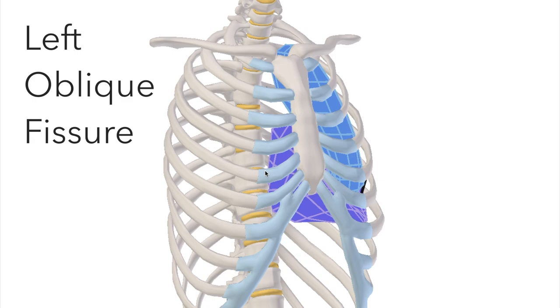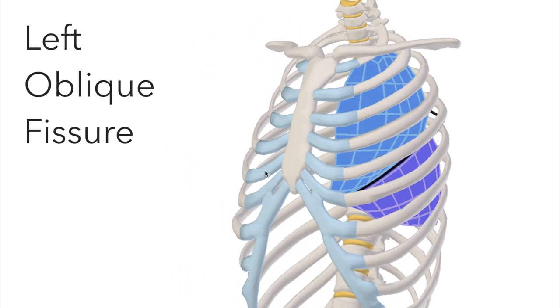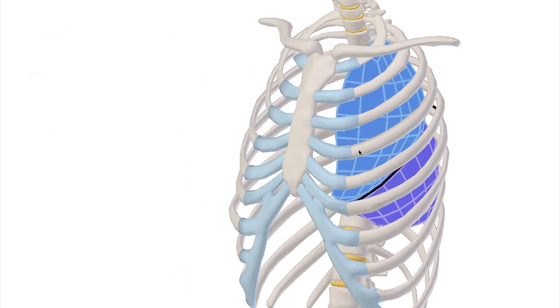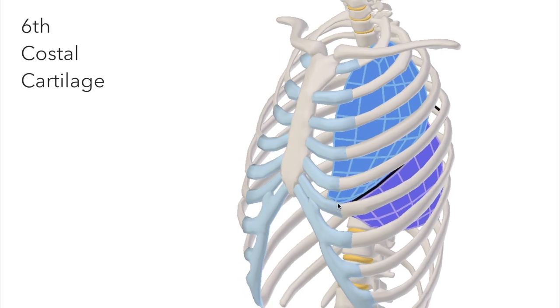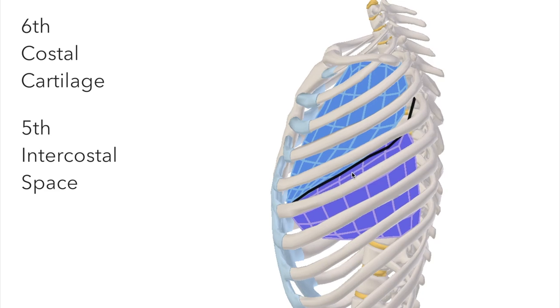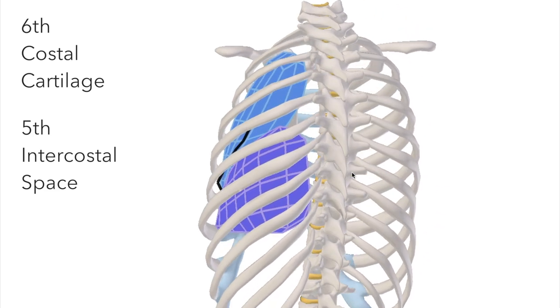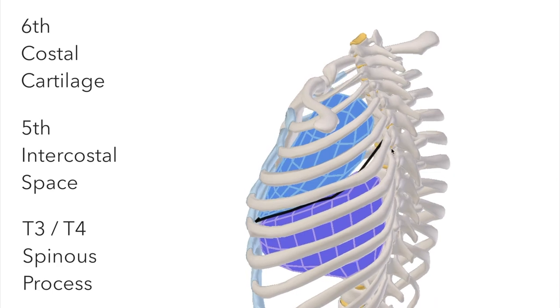The left oblique fissure corresponds pretty well with the same on the right, so this should be our sixth costal cartilage, yep. Then the fifth intercostal space again, then just a bit higher than where we ended up on the right hand side.